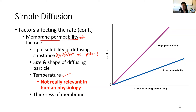Temperature is more relevant in experimental or simulated environments rather than human physiology. But it makes sense: increasing heat increases the thermal activity of particles, making them more likely to bounce around, encounter the membrane, and cross it.